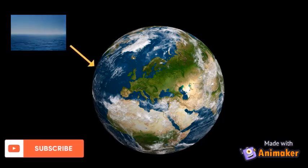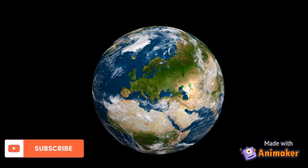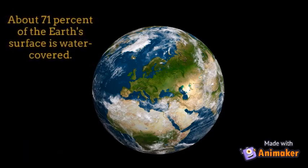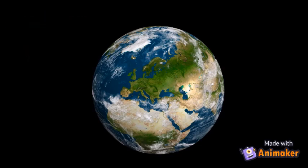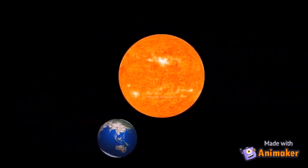The blue areas are water. About 71% of Earth's surface is covered with water. Earth is always moving as it orbits the sun.